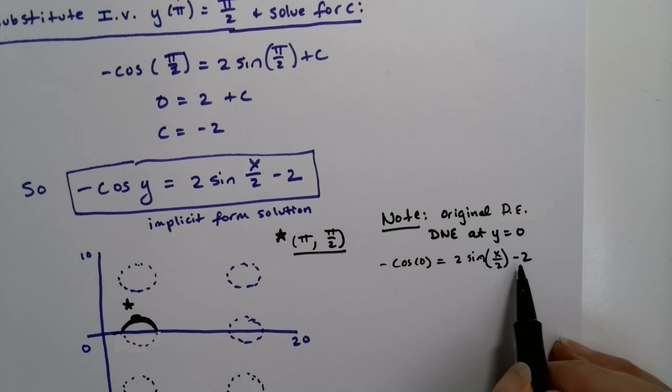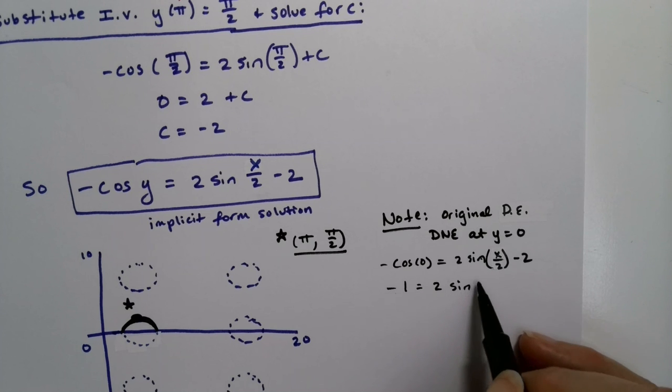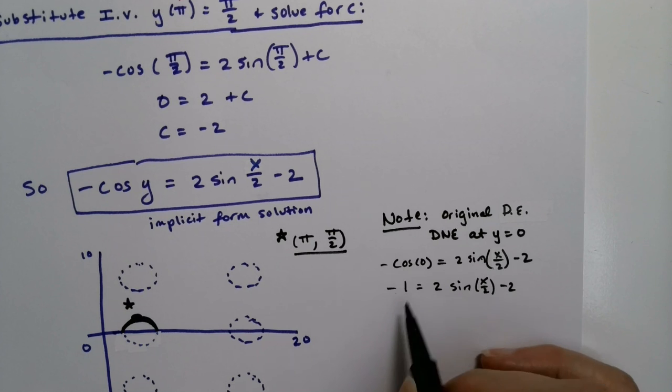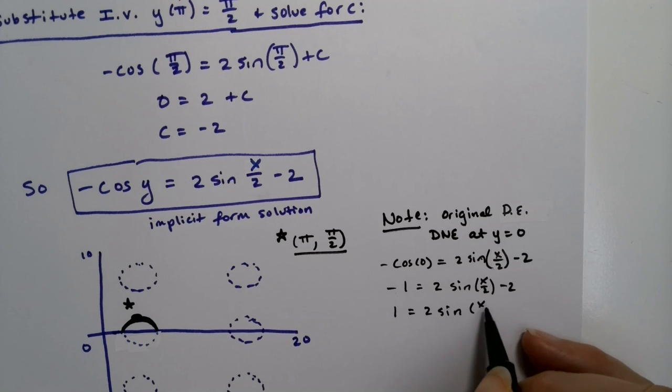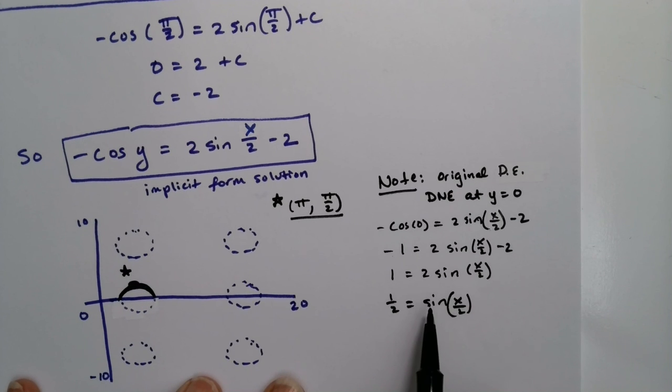All right. So then this would be negative one equals two sine x over two minus two. I'd add two, divide by two. So that'd be one equals two sine of x over two. And that would mean one half equals sine of x over two. So some angle would have a sine value of a half. Hmm. Okay. On the unit circle...